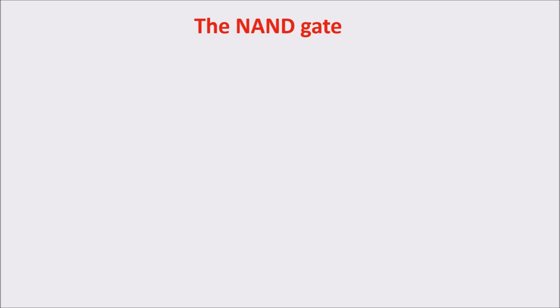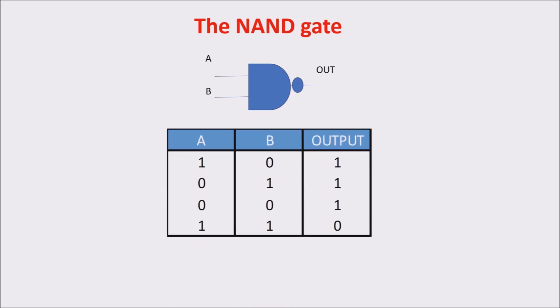Before studying the NAND latch working, let's see once again the NAND gate operations. This is the NAND gate and this is its truth table. You can see, if there is a zero at least in one of the two inputs, the output is one. The only way to get a zero on the output is applying one to both the inputs.